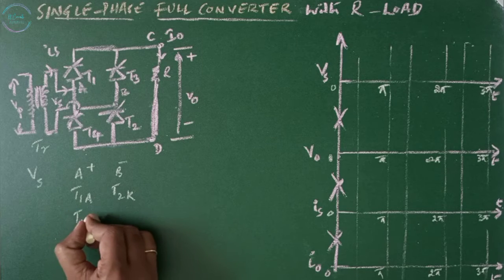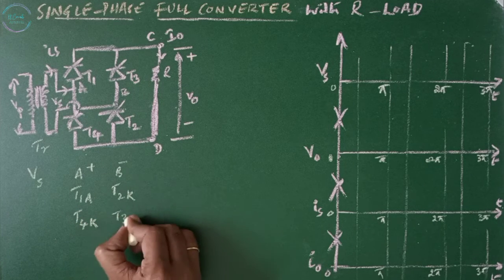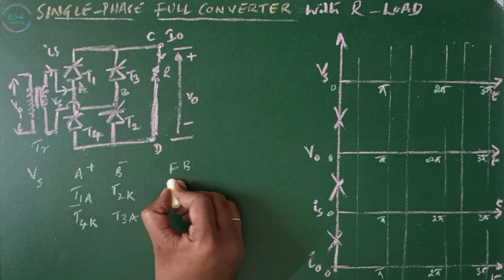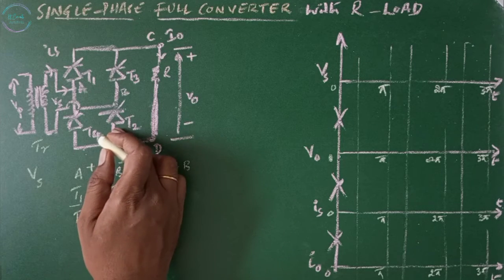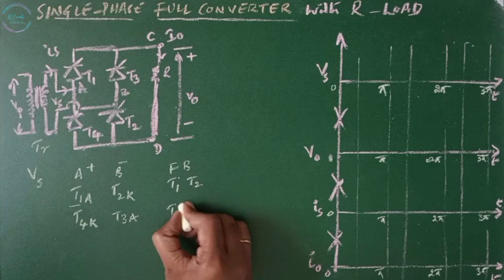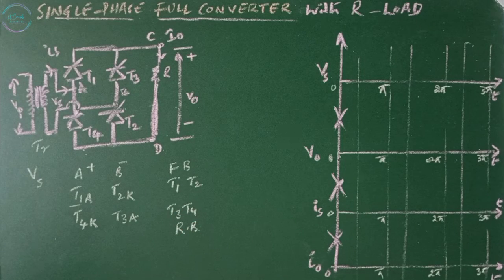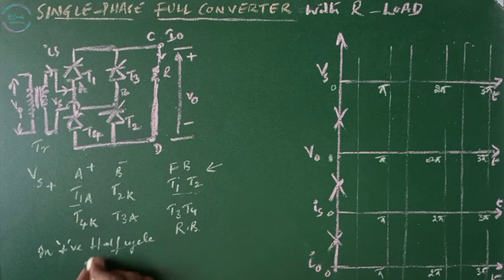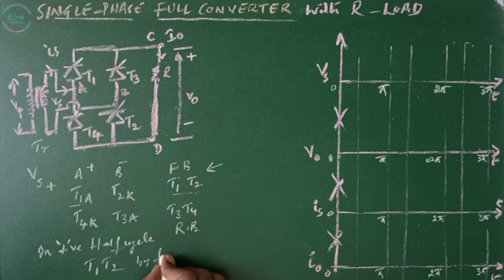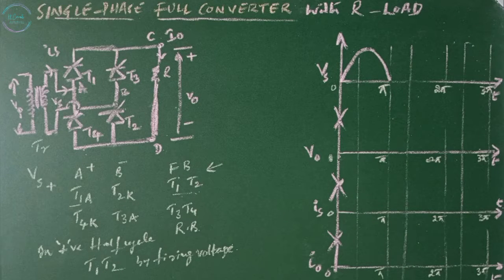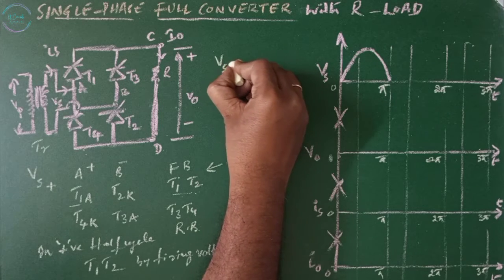Thyristor T4's cathode is positive and T3's anode is negative. For conduction, a thyristor must be forward biased. T1 is forward biased, T2 is also forward biased, whereas T3 and T4 are in reverse biased condition initially. So we can turn on T1 and T2 since both are forward biased. In the positive half cycle, we can turn on T1 and T2 by giving a firing signal. This is the input signal during the positive half cycle, where omega-t is zero to pi.